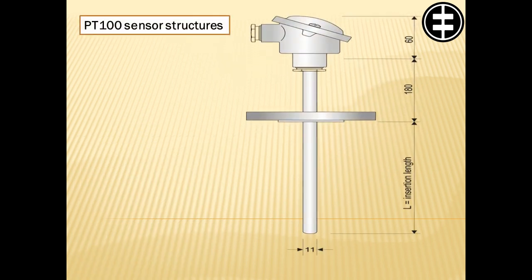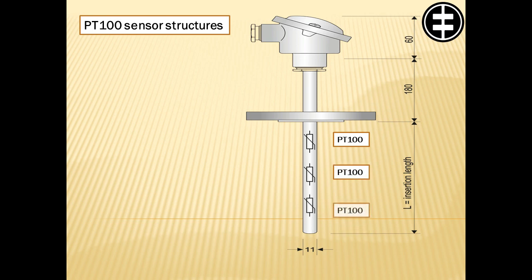PT100 sensor structures. One sensor structure can include also several PT100 resistances: 1, 2 or 3 PT100. Most common is 1 PT100.